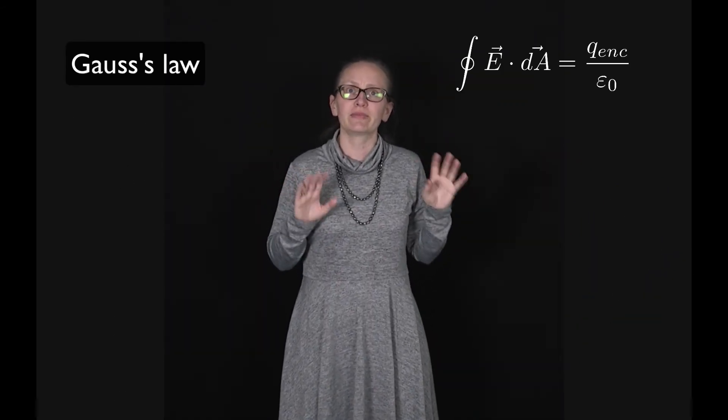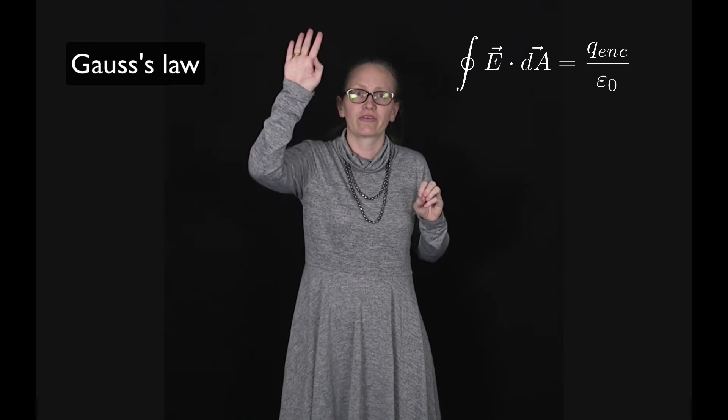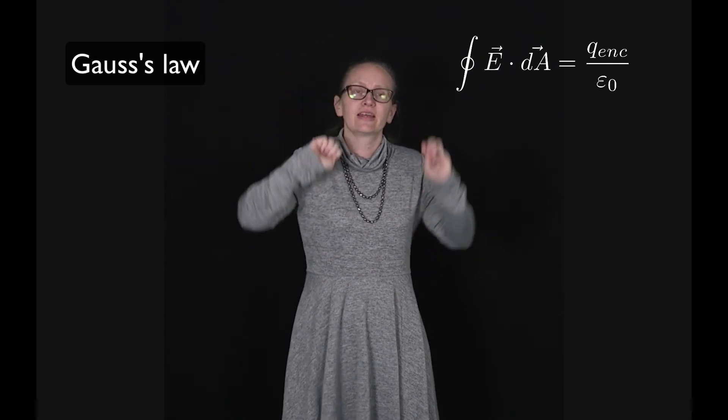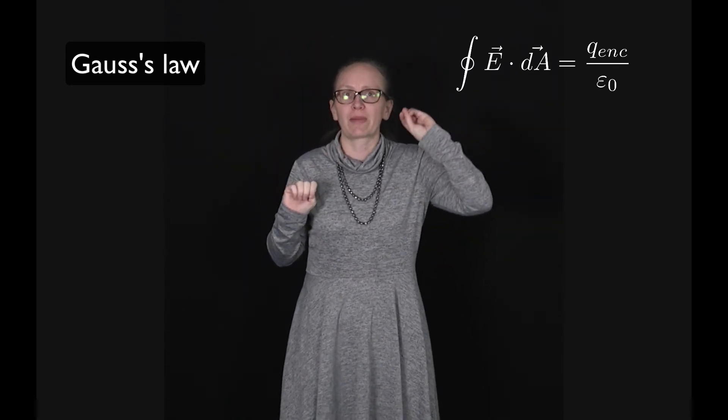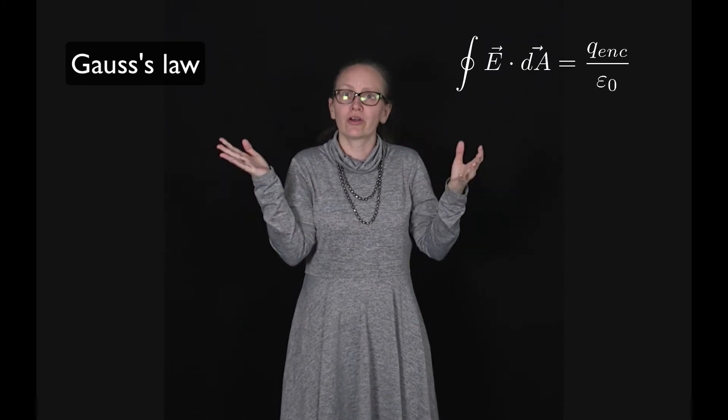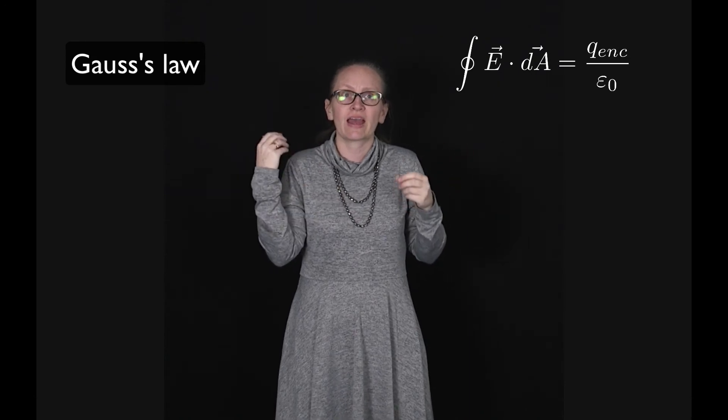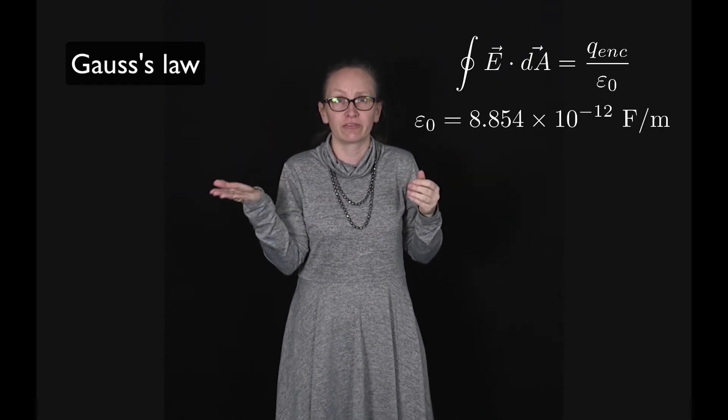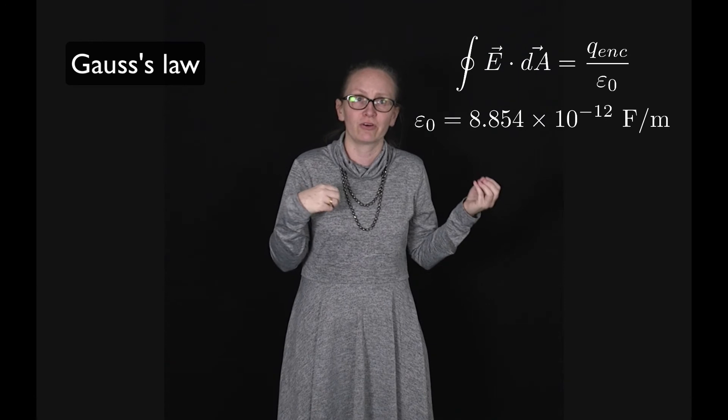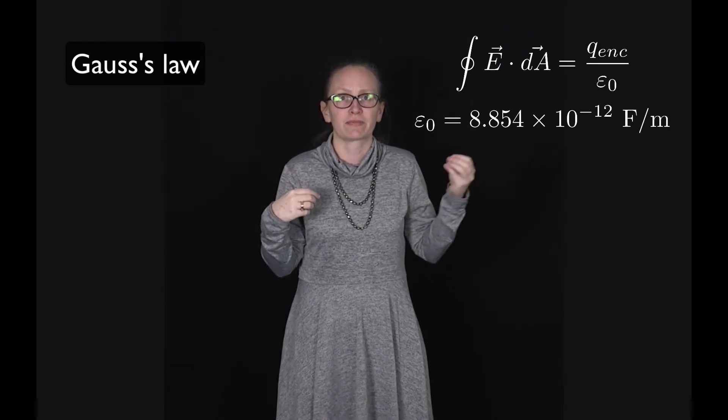What we've just discussed is known as Gauss's law and it can be written as the integral over a closed surface of E dot dA is equal to Q enclosed divided by epsilon naught. Q enclosed here is the charge enclosed within the surface measured in Coulombs, and epsilon naught is the permittivity of free space which is 8.854 times 10 to the minus 12 farads per meter.